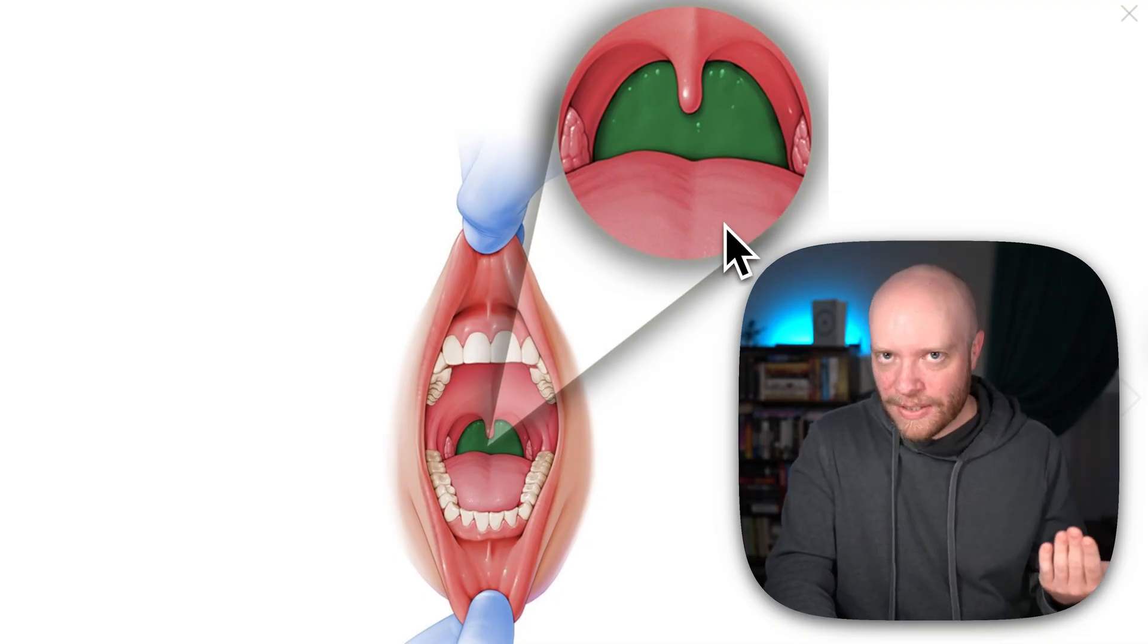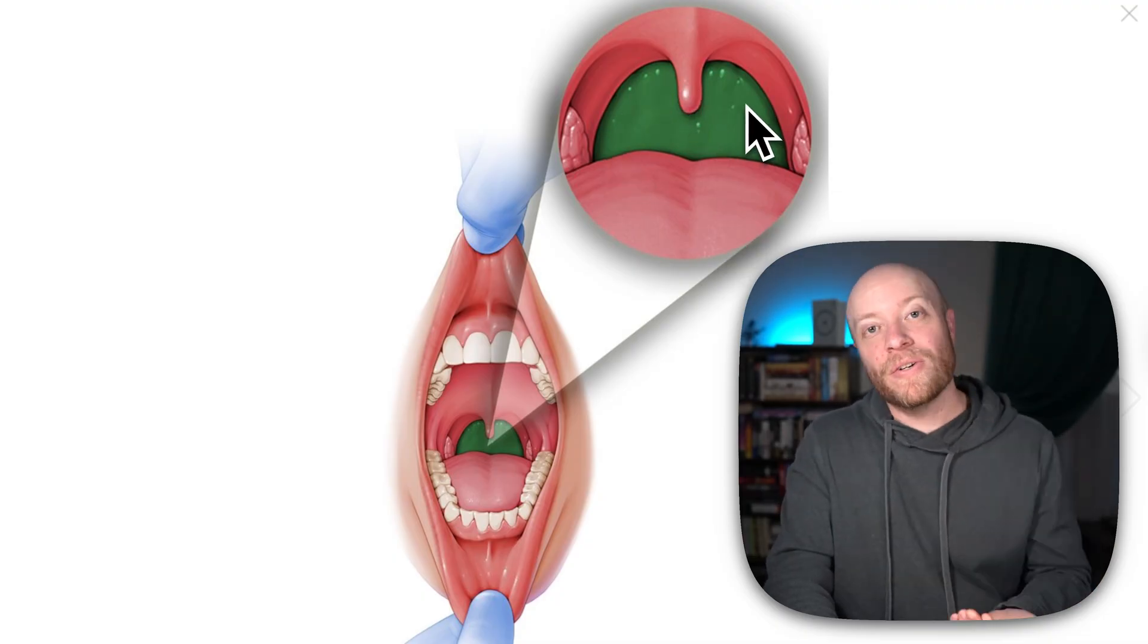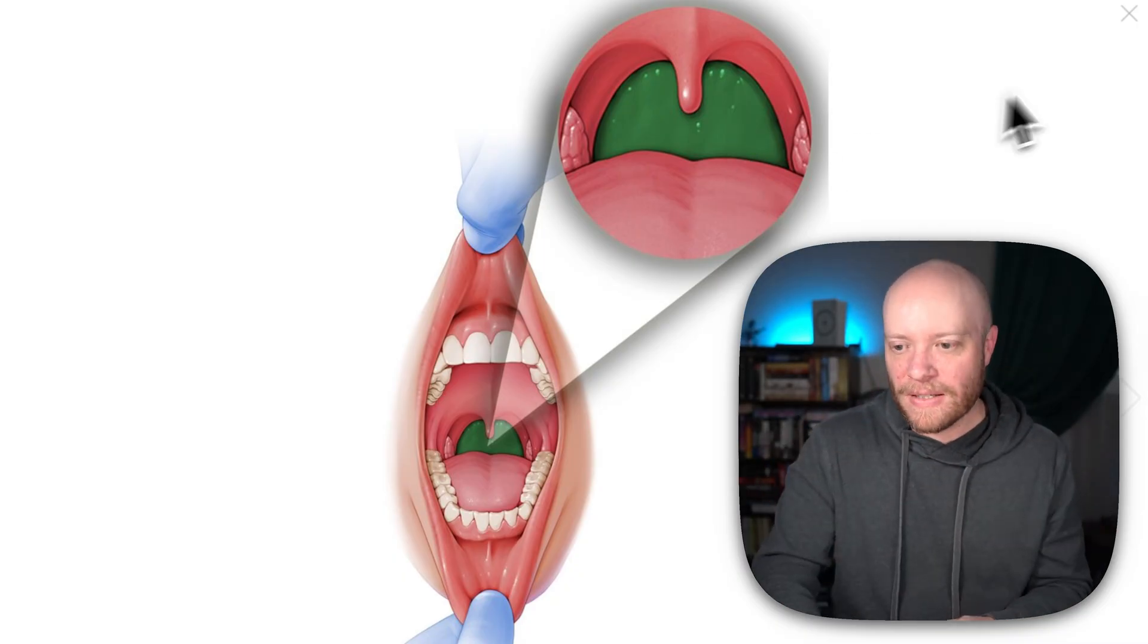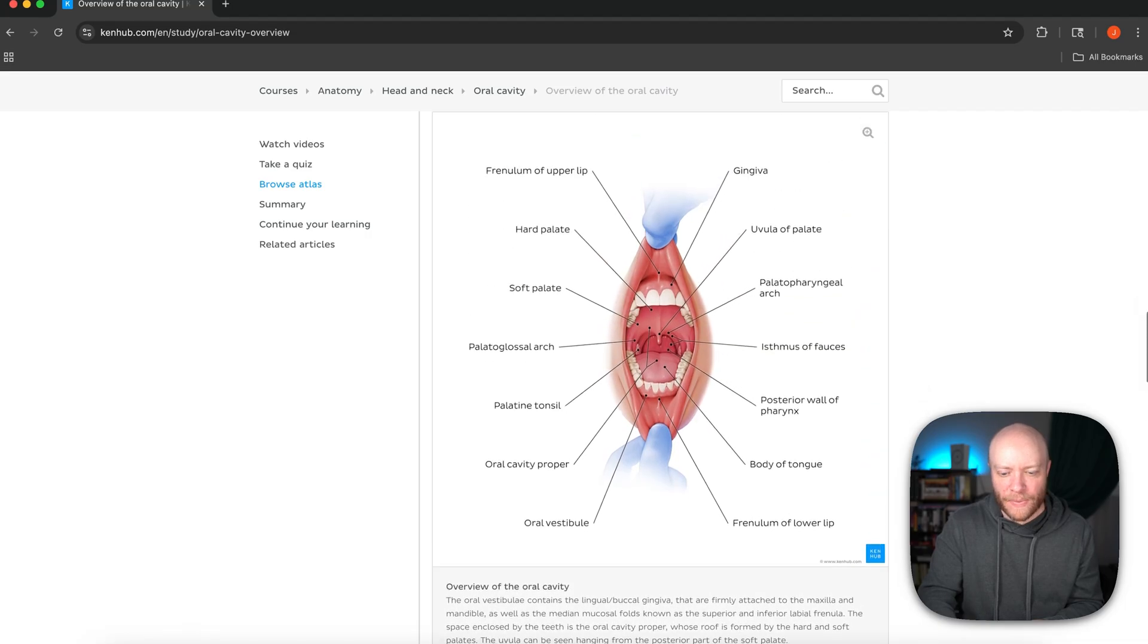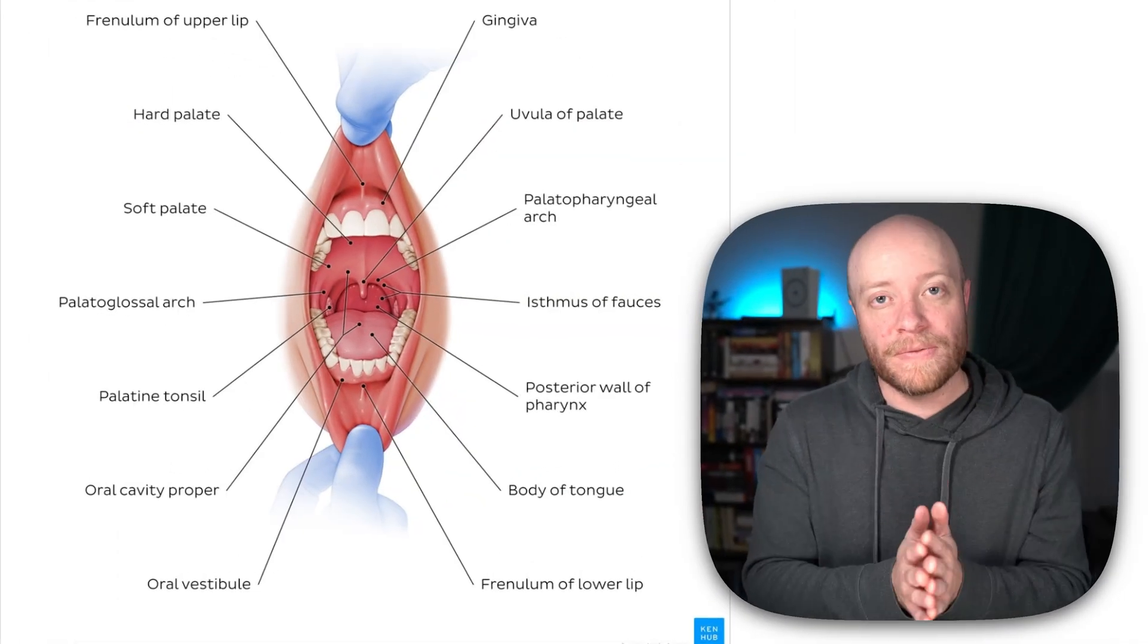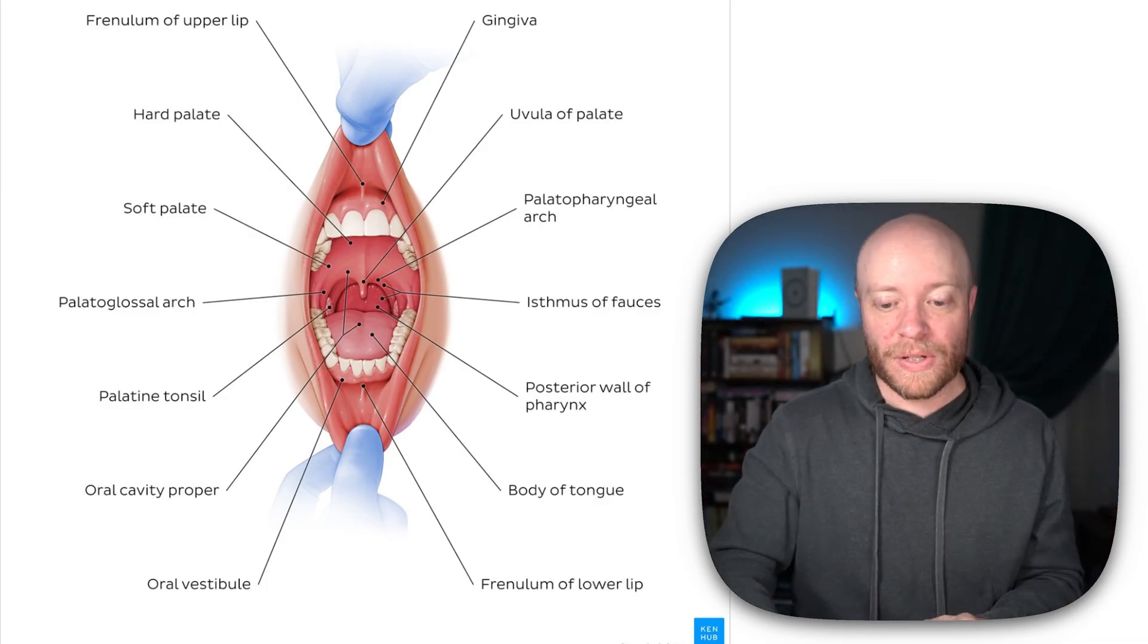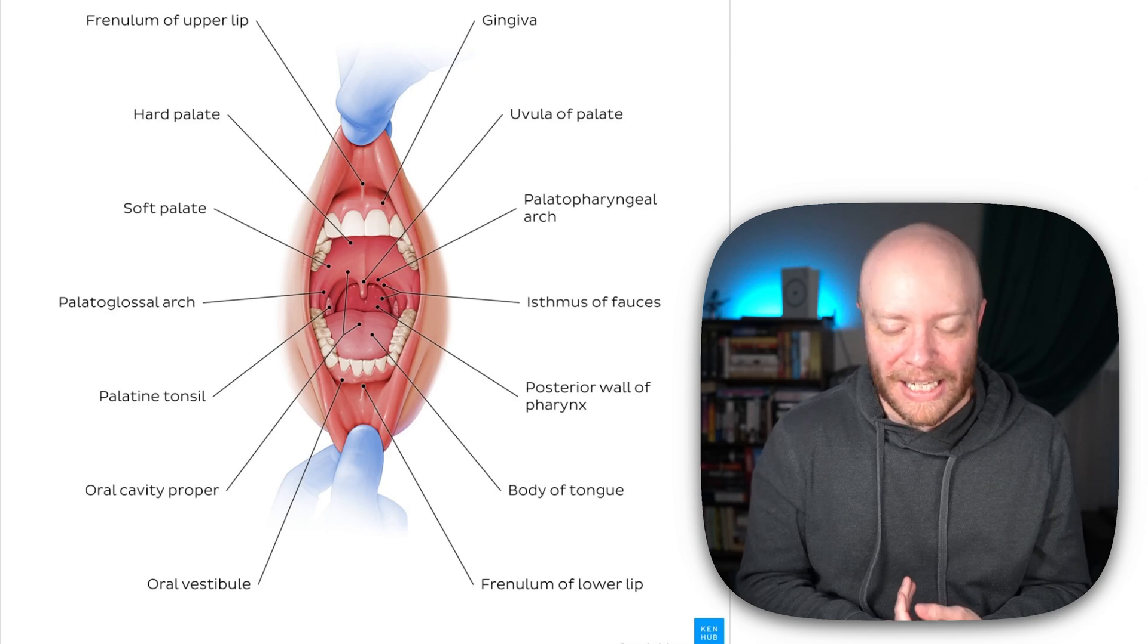We've already seen this, but we can just mention it. This right here is that posterior wall of the pharynx. All of this. I'm going to actually get out of this right here. If we go up, you can see that's also part of this study unit - an image that kind of puts everything together. You can see just how much is going to be included inside of the oral cavity.